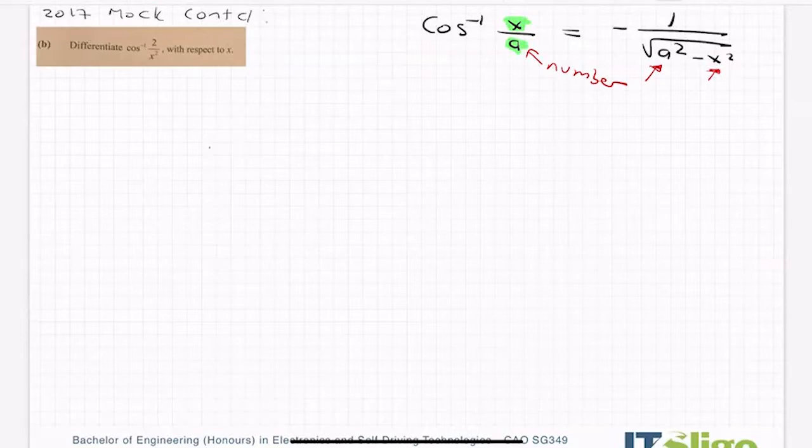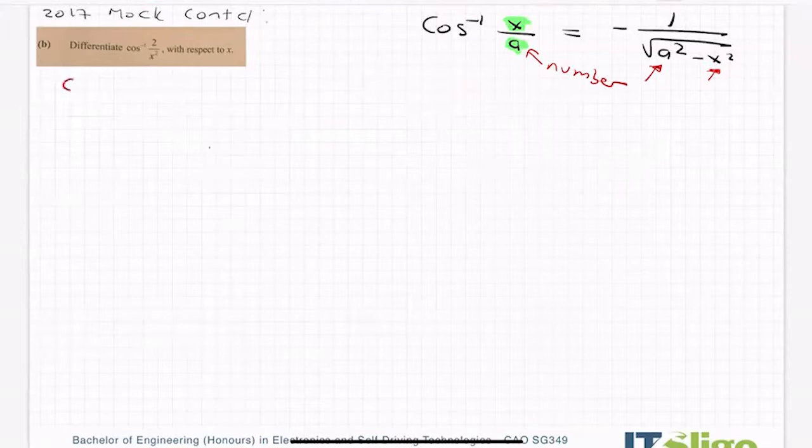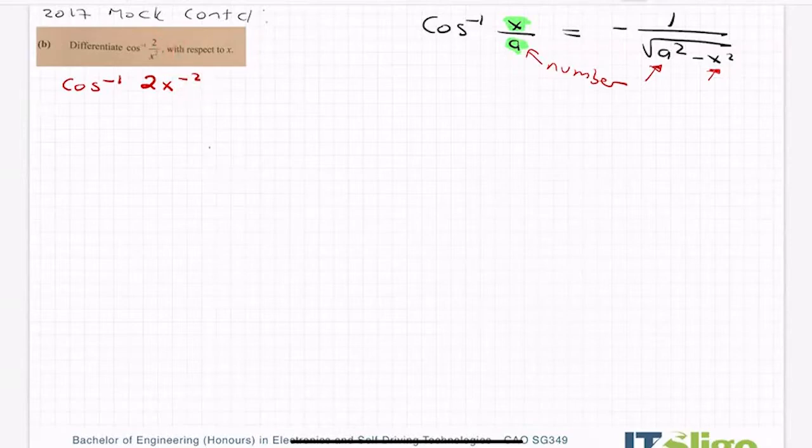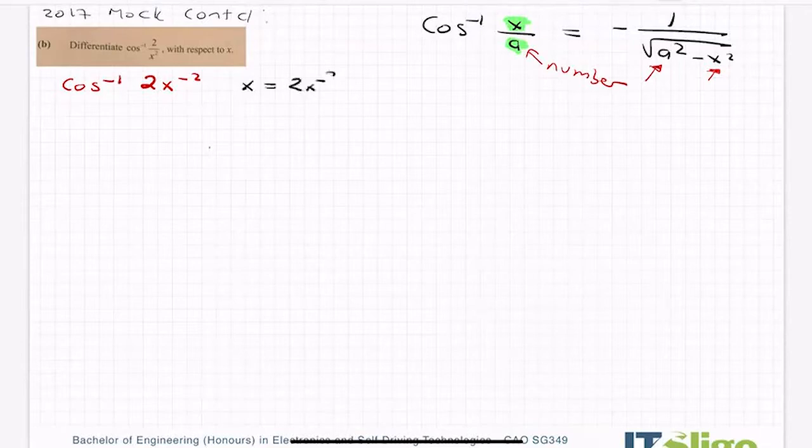So we have differentiate cos inverse of 2 over x squared with respect to x. Now you could think we have an a over x here and you would be forgiven for thinking that. But how about I write it like this? So cos inverse of 2x to the minus 2. I've just employed the reciprocal rule which tells me that when a square is on the bottom, I can bring it up the top and it becomes a minus 2.